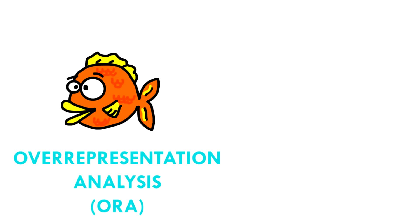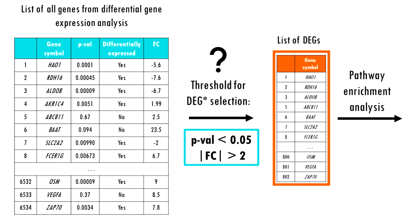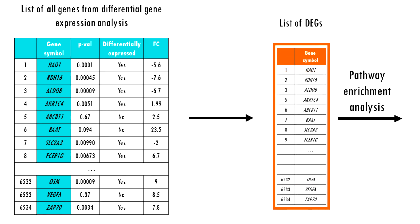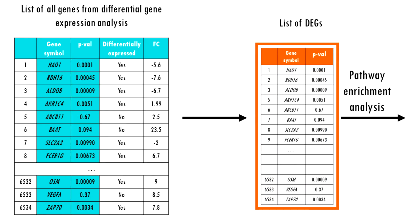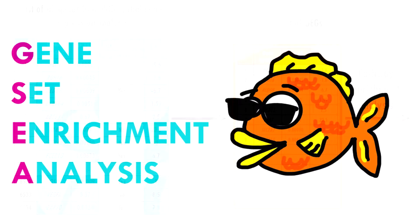So the main issue with over-representation analysis is that results depend a lot on our criteria. To solve this problem, a second generation of methods was designed, called functional class scoring methods. They eliminate this dependency by taking all genes into consideration — looking not only for significant changes in sets of functionally related genes, but also genes with large expression changes. One of the most popular approaches is gene set enrichment analysis, or GSEA, which is the method we're going to focus on today.